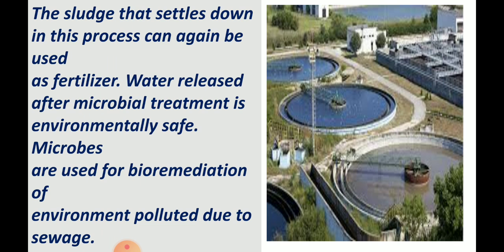In a sewage management plant, sludge — the very dirty slurry of pollutants carried by water from industries and domestic waste — is allowed to settle. The heavy particles collected from the bottom are used as fertilizers. The water above the sludge is collected for microbial treatment to make it environment-safe. These microbes are used for bioremediation, which means microbes that help break down environmental pollutants.